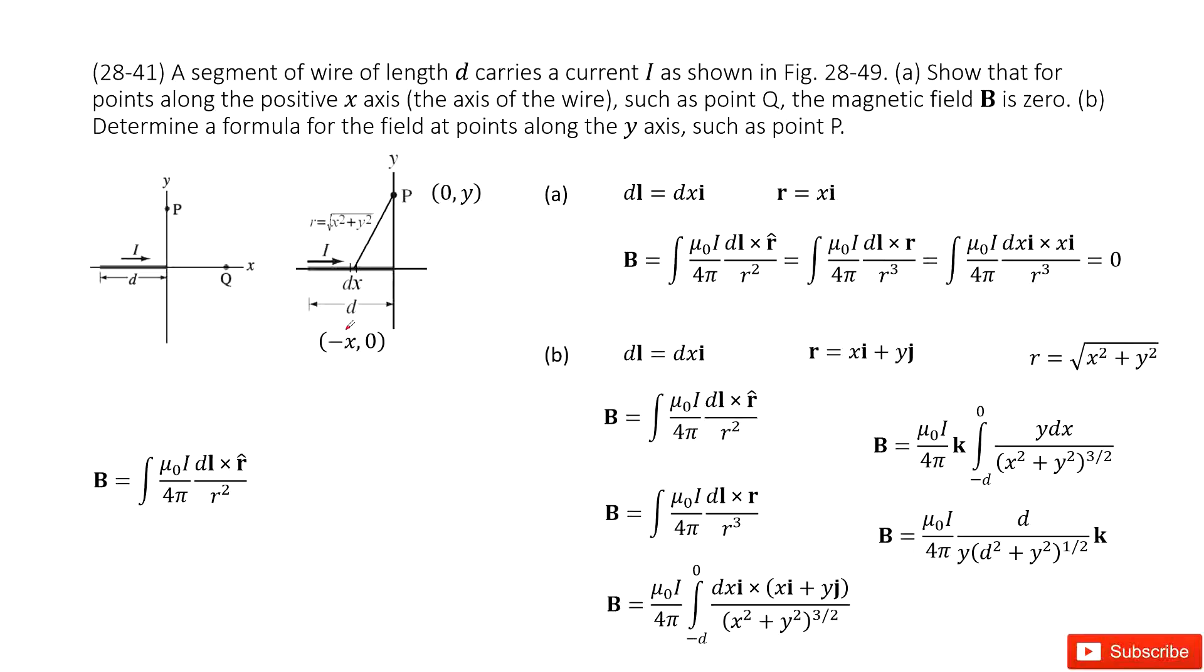As you can see, we have a part of wire. The length is D and the current I is located in this location. Now we need to find the magnetic field in P position and Q position.